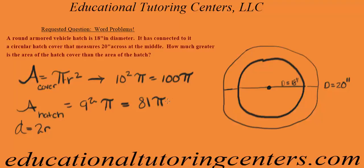So now we want to know how much greater is the area of the hatch cover than the hatch. So we just simply subtract those. So we're going to do 100 minus 81. So 81 plus 9 makes 90, and 10 more will make 100. So 19 pi.